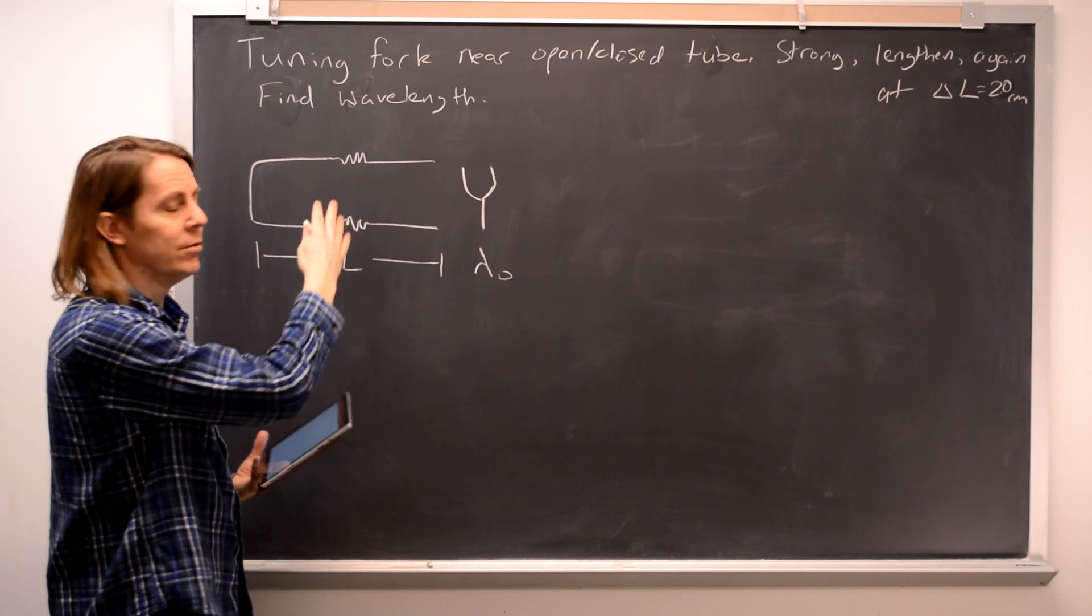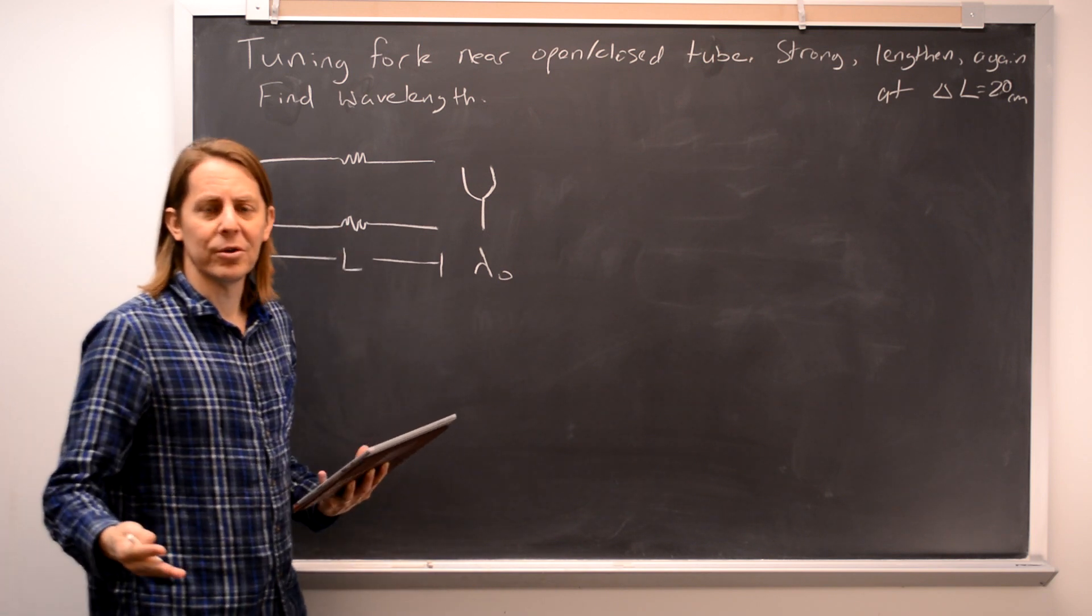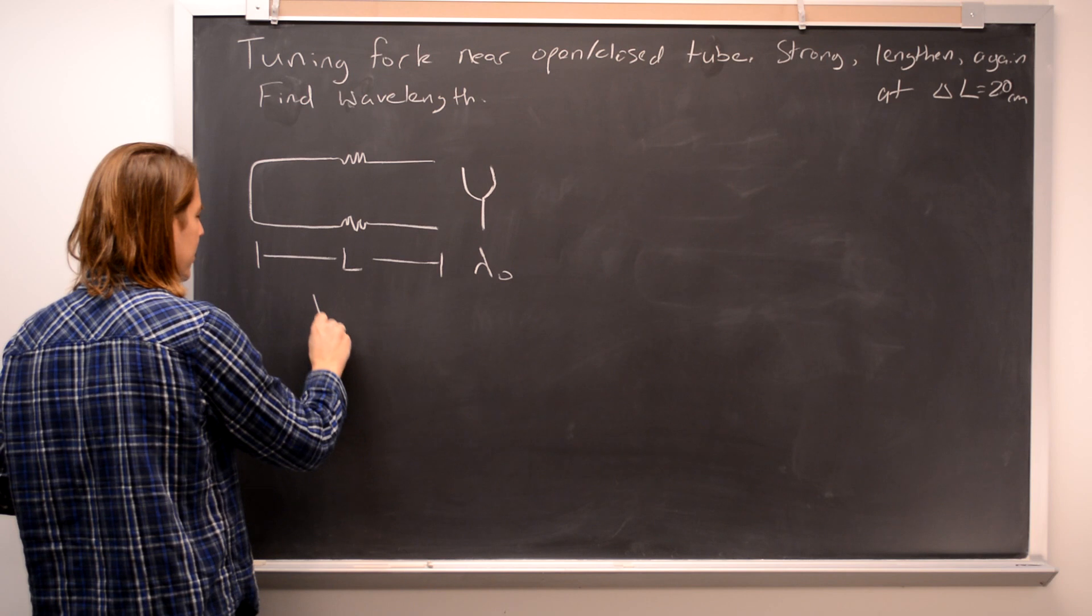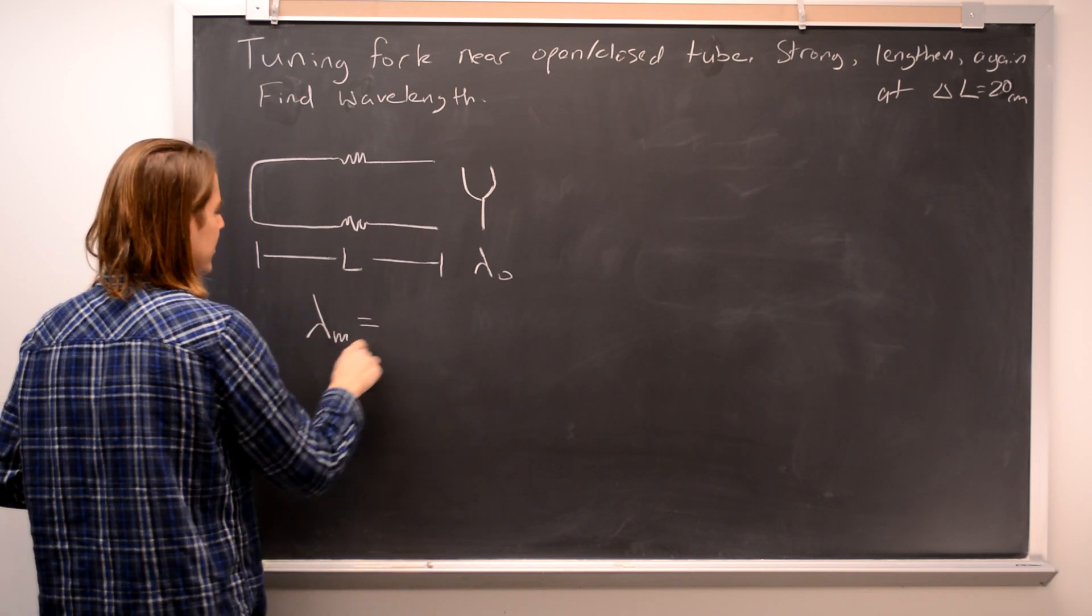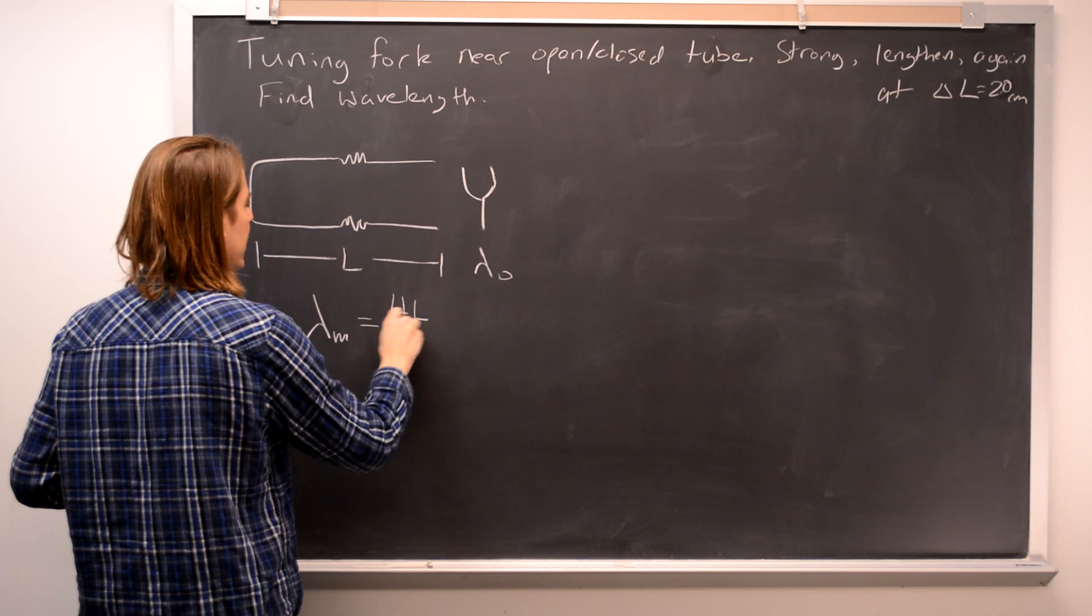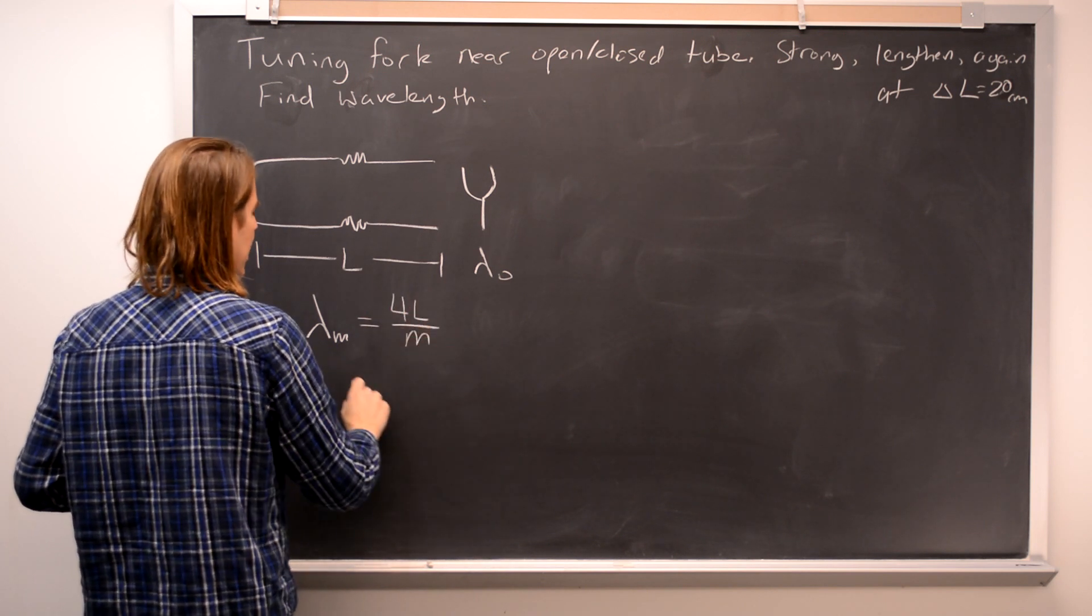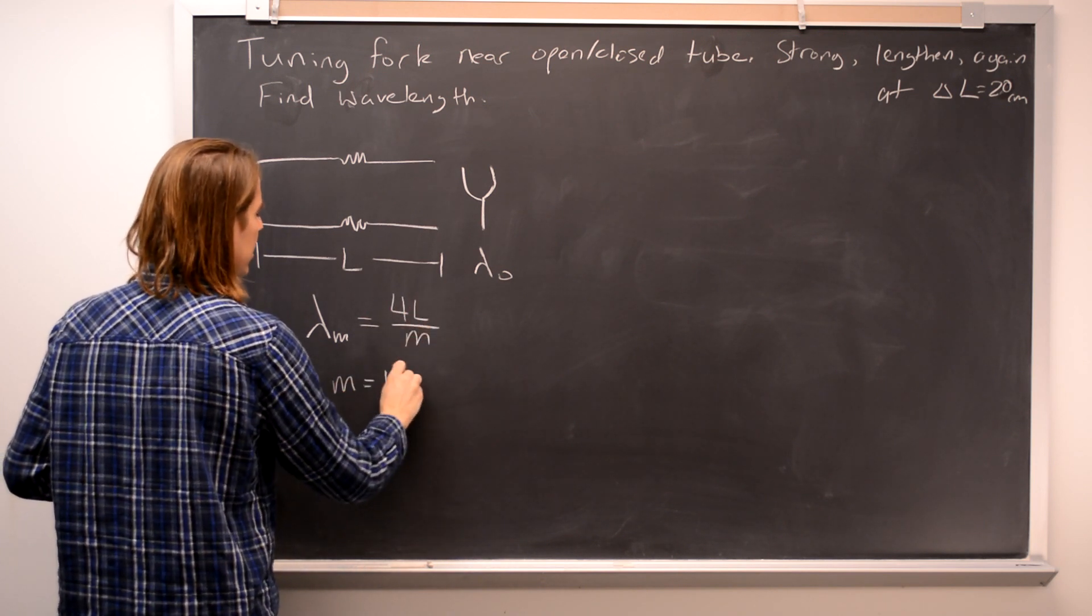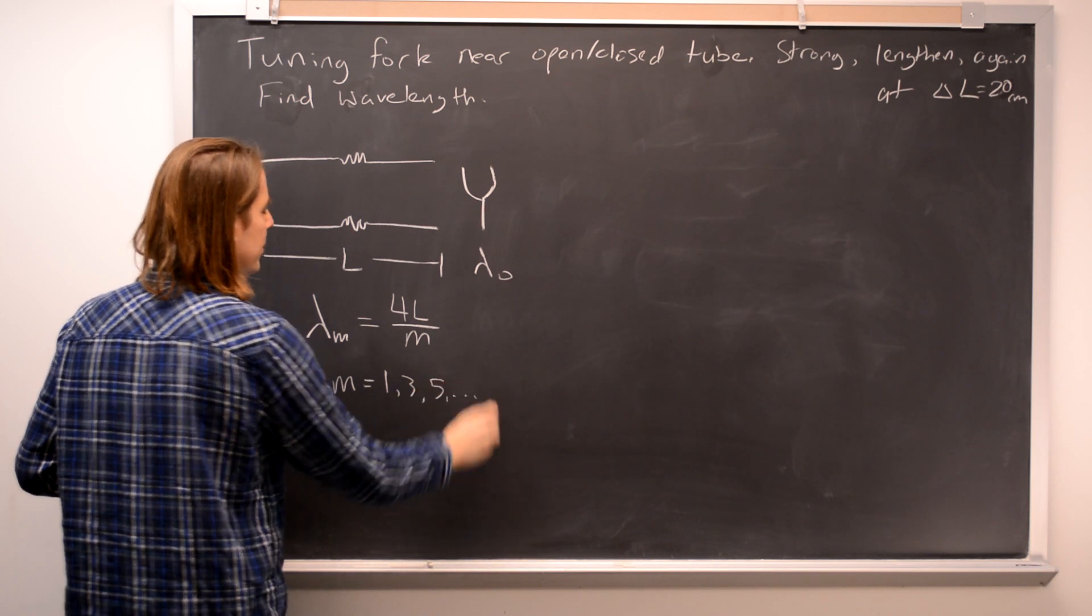The question is, what's the wavelength? All right, so you might start this one by going straight to your formula for the wavelengths of the different modes of an open-closed tube, which is 4L over M, but not all M - M is 1, 3, 5, etc.